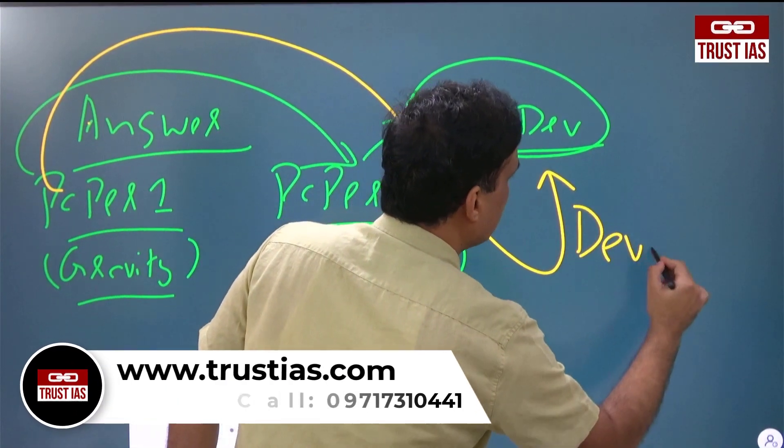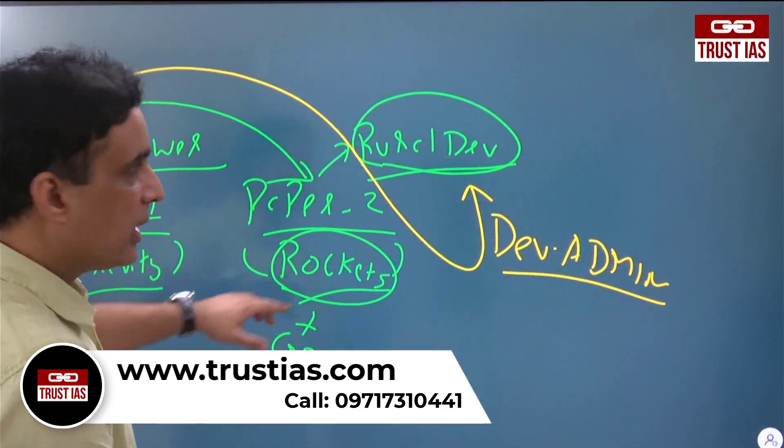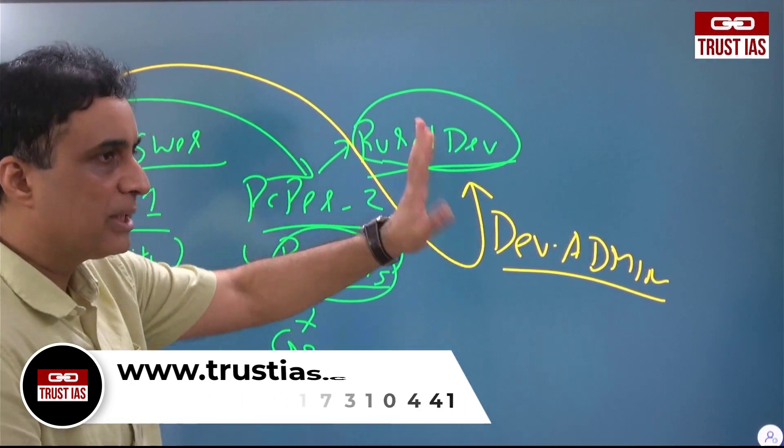Here you will add the concept we call 'development administration'. We will add development administration because it's all about rural development. You may not know yet what development administration is — just take a basic understanding: it's a Paper 1 concept that I will add into the rural development answer. I'll show you how to add it.